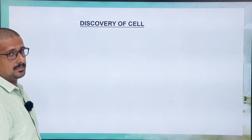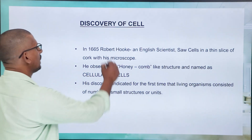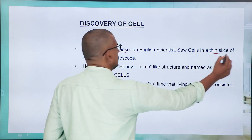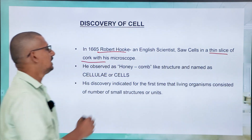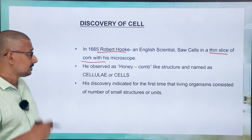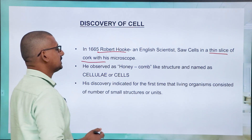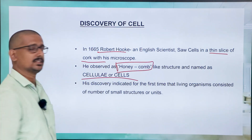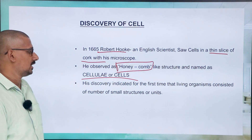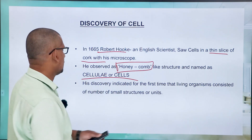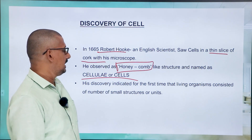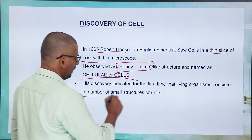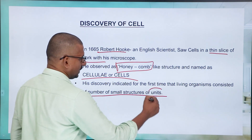Let's begin with the discovery of cells. Robert Hooke, in 1665, was an English scientist. He saw cells in a thin slice of cork with his microscope. He observed a honeycomb-like structure and named it as cellulae, or cells.